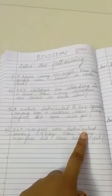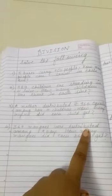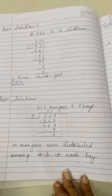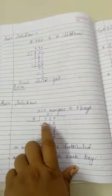Next problem: 369 mangoes were distributed among nine boys. So how many mangoes did each boy get? So what we will do? 369 mangoes divided by 9 boys.